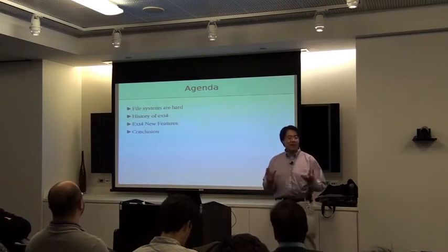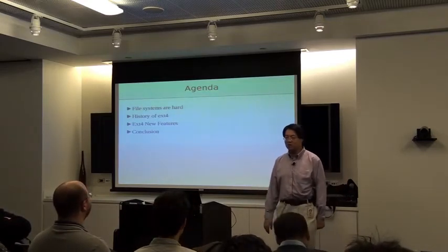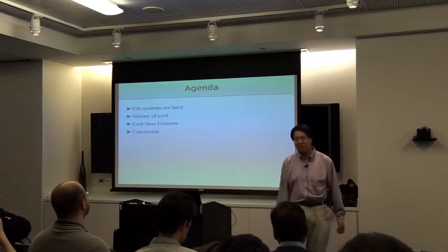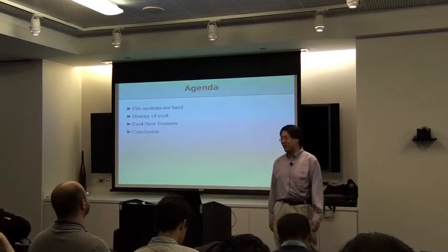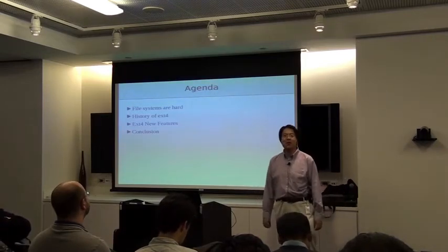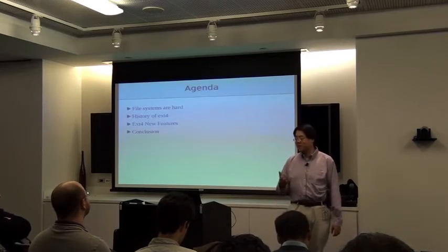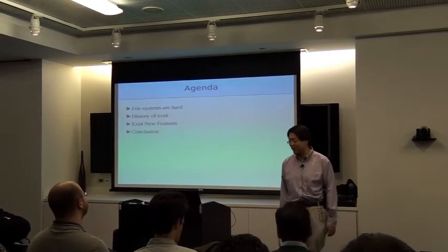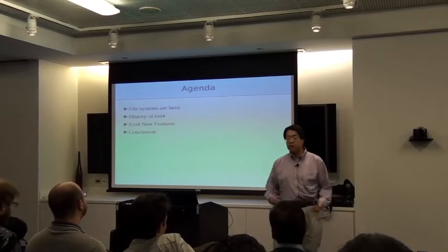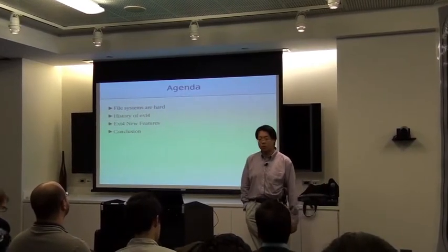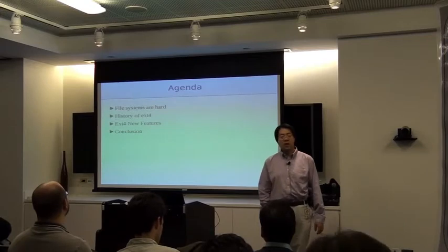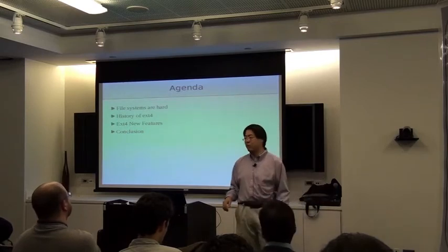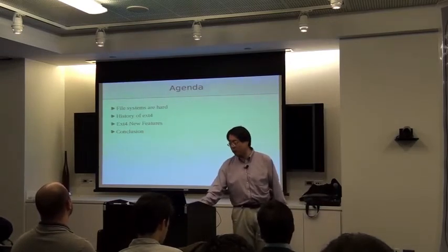In order to do that, I want to talk a little bit about why file systems are hard — because people love making file systems, and I think it's great that there are over 60 or 70 different file systems in the Linux kernel tree at this point. Then I'll talk about the history of EXT4, how it got to where it is, some of the new features, some of the advantages and disadvantages, and then I'll wrap it up.